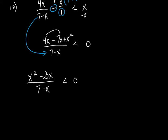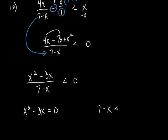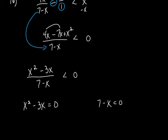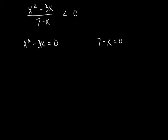Once we get that situation, what are we going to do to the numerator? Set it equal to 0, right? And then we're going to do the same thing with the denominator — set the denominator equal to 0 as well. Everybody with me so far?